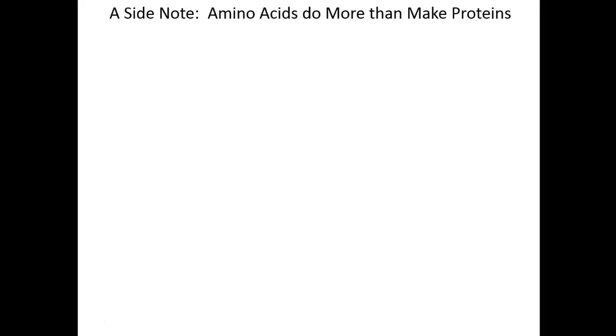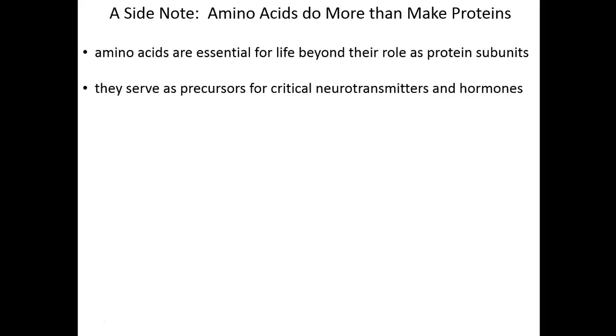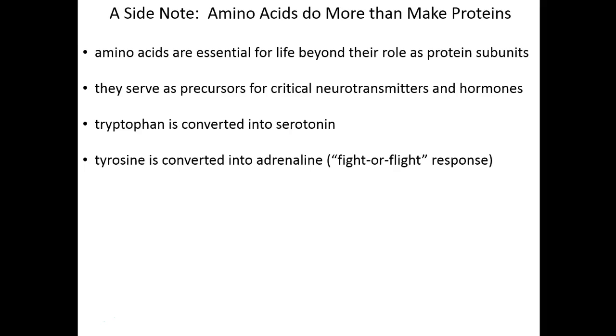As a side note, we can talk about things amino acids do that don't involve making proteins. Amino acids are essential for life well beyond their roles as building blocks of proteins. They serve as precursors for other molecules used in our bodies, such as neurotransmitters and hormones. Tryptophan is converted into serotonin—the feel-good brain chemical. Tyrosine is converted into adrenaline, our fight-or-flight response.